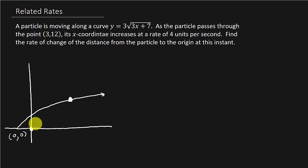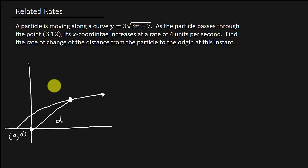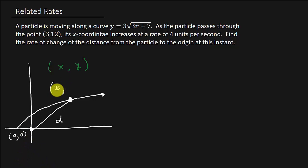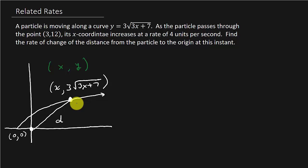The x-coordinate increases at a rate of 4 units per second. We need to find how fast this distance is changing. The coordinates of the point are in the form (x, y), where we know the x-coordinate. The y-coordinate is given by y equals 3 times the square root of 3x plus 7. So there are the coordinates of that point.